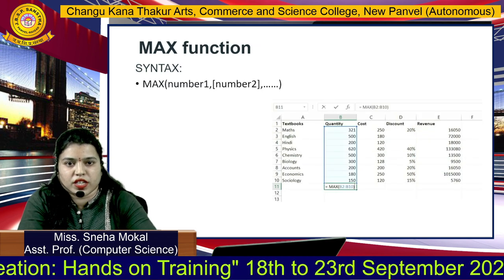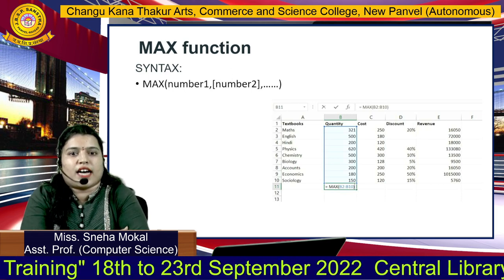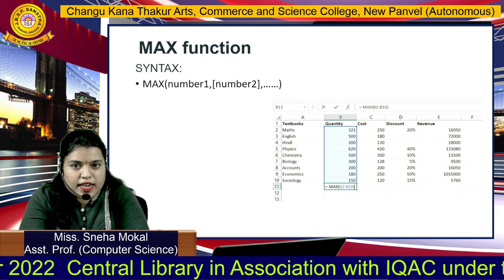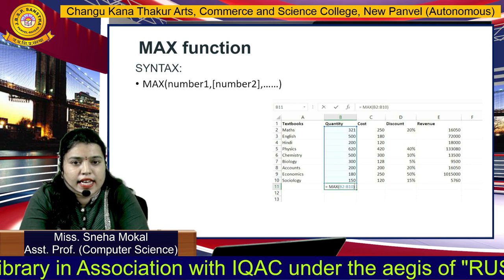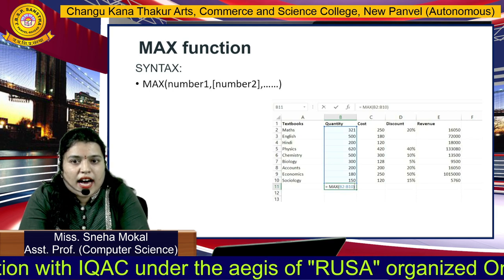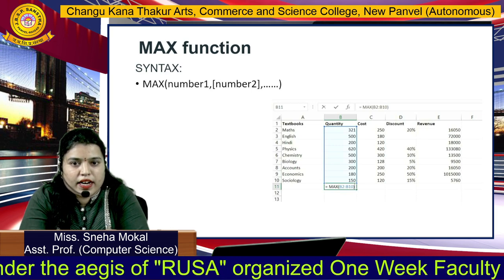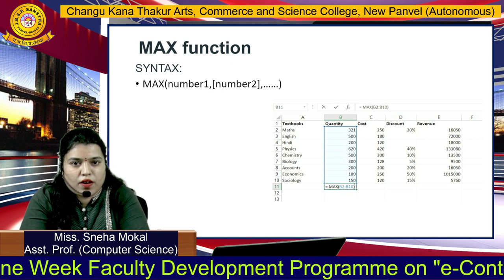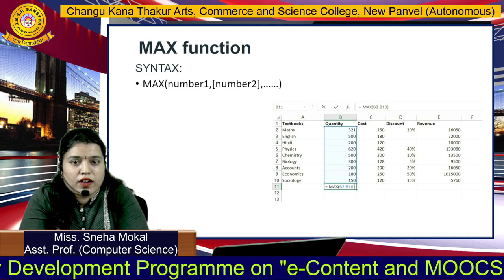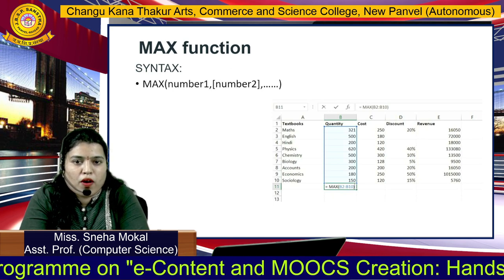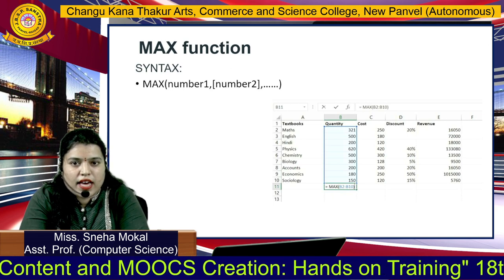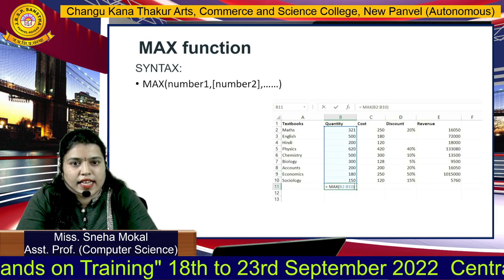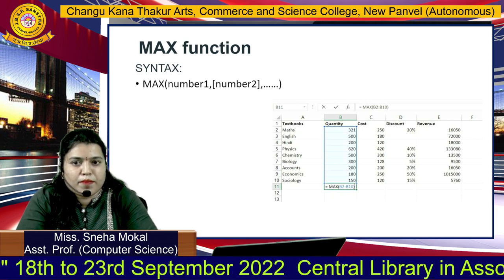अभी next है maximum function. हमारे table में जब multiple numbers होंगे, तो maximum number find करना difficult जाएगा, तो Excel ने maximum number find करने के लिए function provide किया है. आपको क्या करना है — equal to MAX डालो, round bracket डालो, उसके बाद आपको numbers select करने हैं जिसमें से maximum number find करना है. Number select करने के बाद आपको output मिल जाएगा — जो भी maximum number रहेगा वो output आ जाएगा. यहाँ पर भी आप multiple numbers डाल सकते हो.